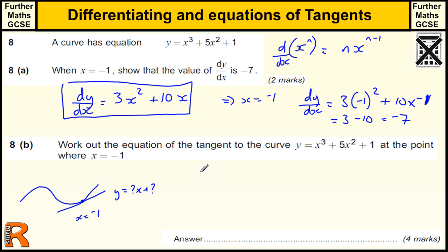That tells us the gradient of the tangent at any value of x. So we just take that function, 3x squared plus 10x, where x equals minus 1. We've actually worked this out, which implies dy by dx equals minus 7. So that tells us that y equals minus 7x plus a constant, c.